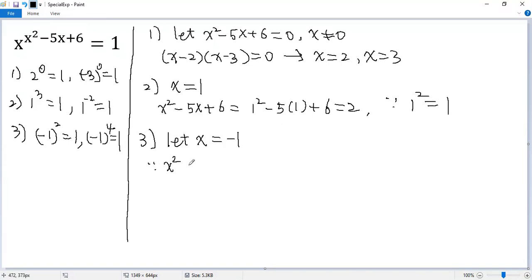x squared minus 5x plus 6 equals negative 1 squared minus 5 times negative 1 plus 6. 1 plus 5, 6 plus 6 equals 12. Yes, negative 1 to the power of 12 equals 1.